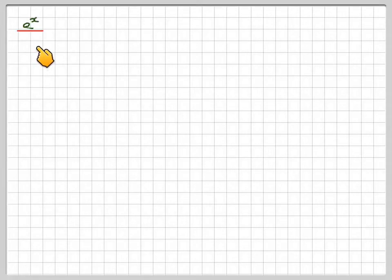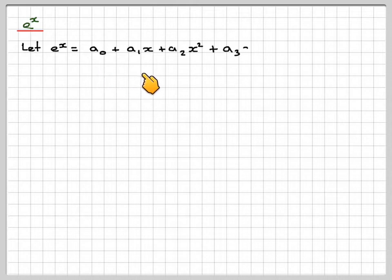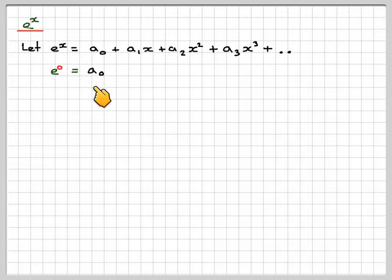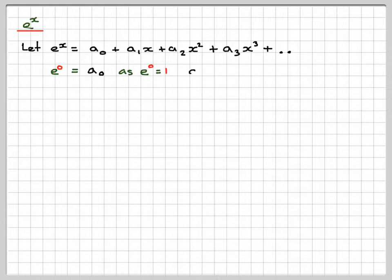Now, if we want to do the same thing for e to the x using Maclaurin's theorem, if we let e to the x be equal to a0 plus a1x plus a2x squared plus a3x cubed, then a0 is equal to e to the 0, which is 1. Therefore, a0 is 1.